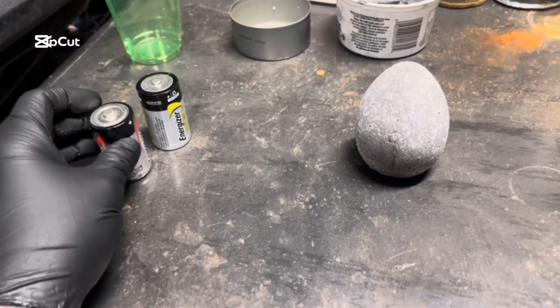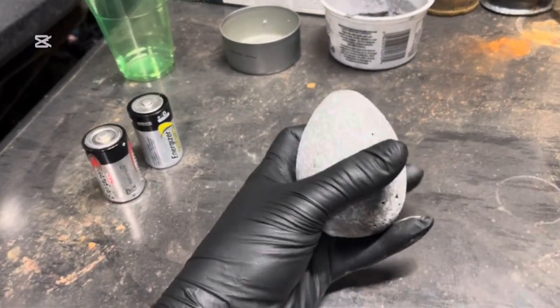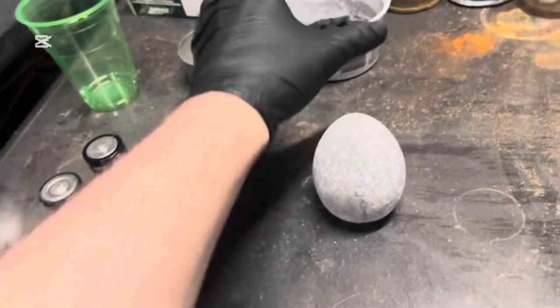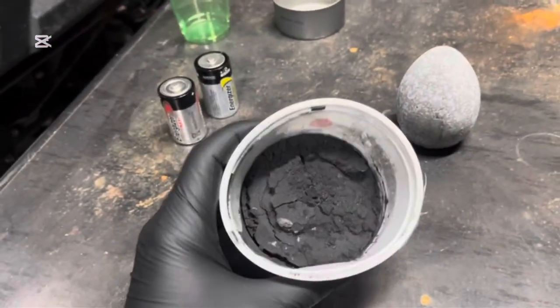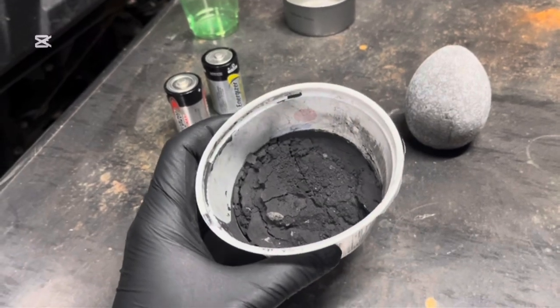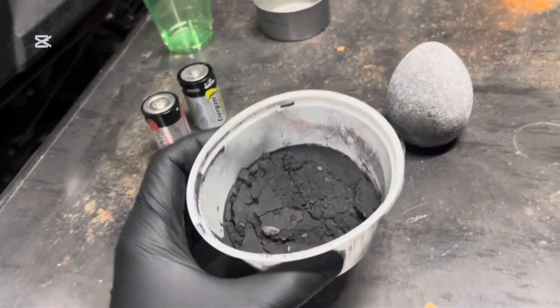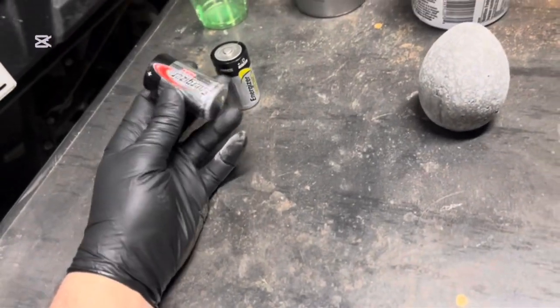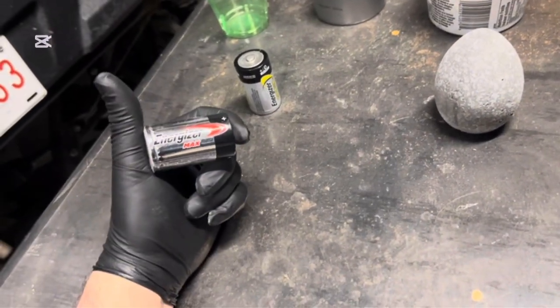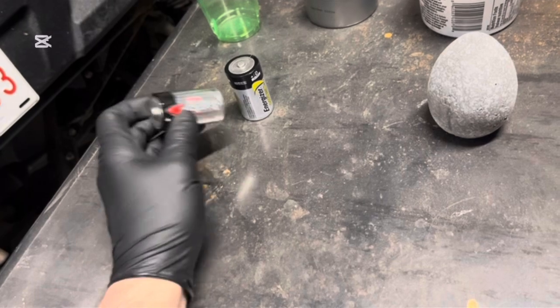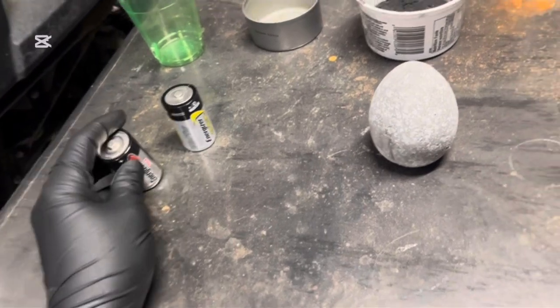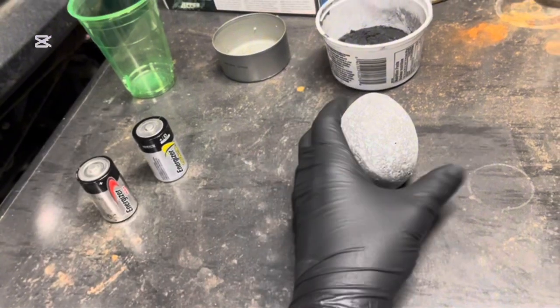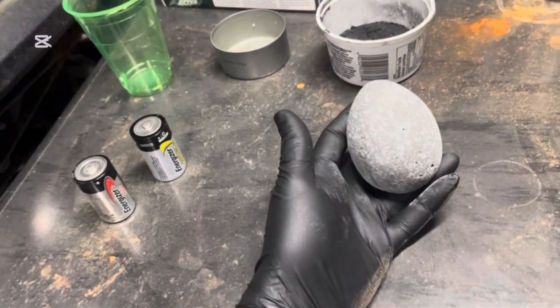What do these used batteries have in common with this concrete egg? The answer is this chemical right here - it's called manganese oxide. It can be found in alkaline batteries where it's used as a cathode, but when the batteries reach the end of their life, we can extract the manganese oxide, wash it, and then use it to color concrete.